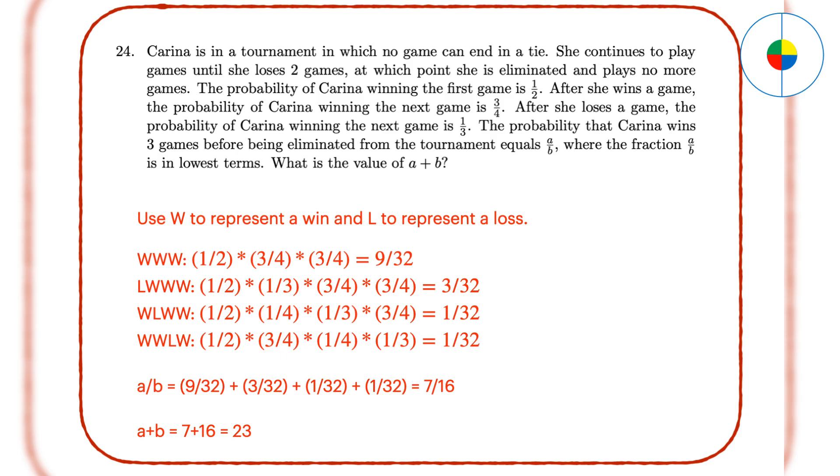Question 24: This is a complex probability problem. We can stop after Karina wins three games. We use W to represent a win and L to represent a loss. The possible sequence of wins and losses can be determined. There are four possible situations. Then, we can calculate the probability for each case, and add them up. The answer is 7 over 16 in lowest terms, so A plus B is 23.